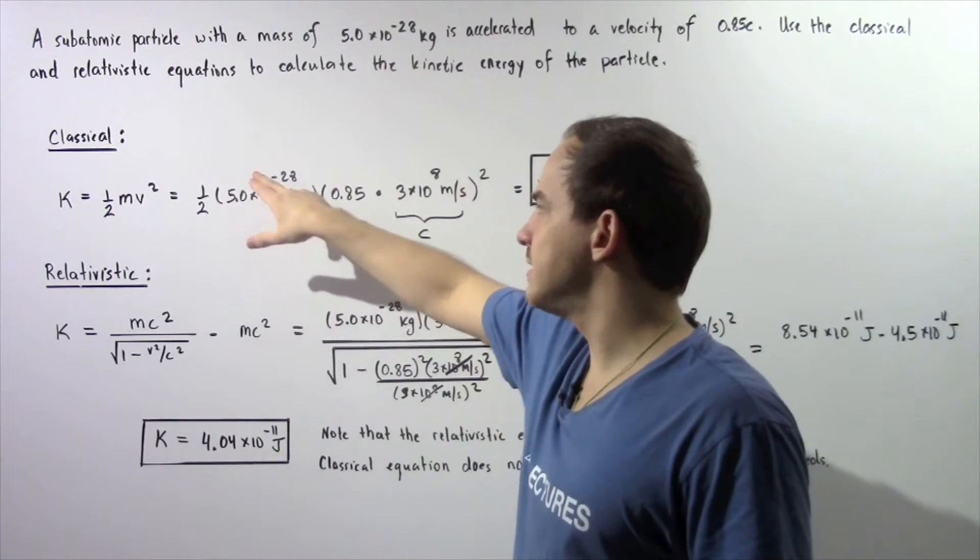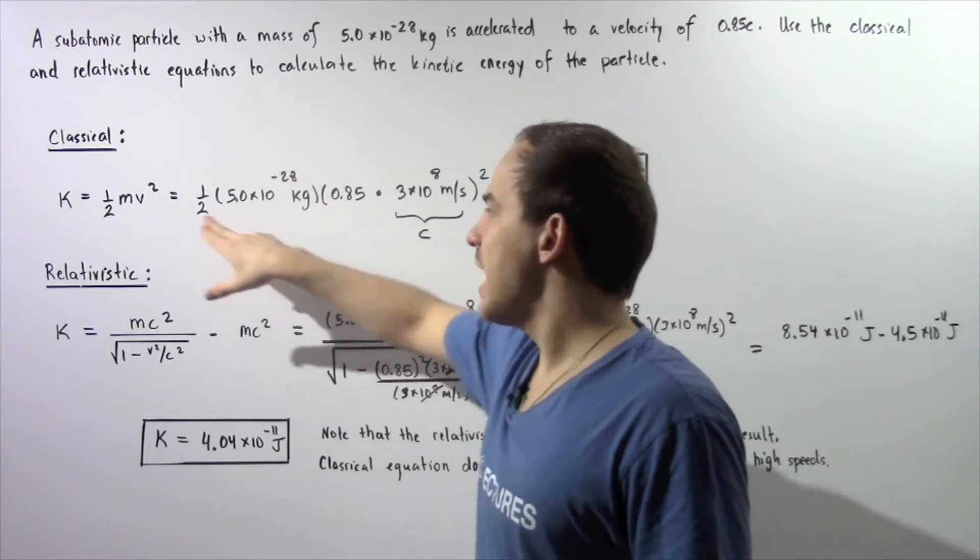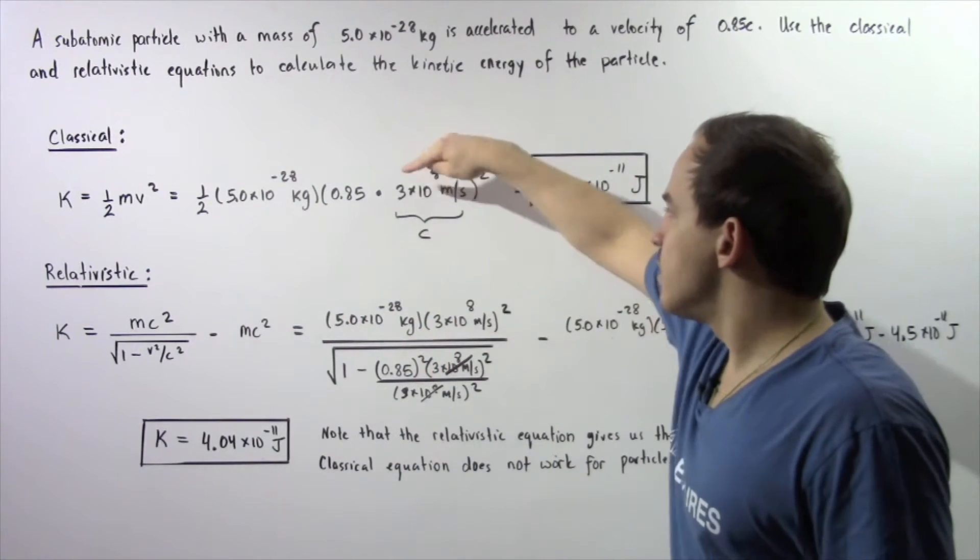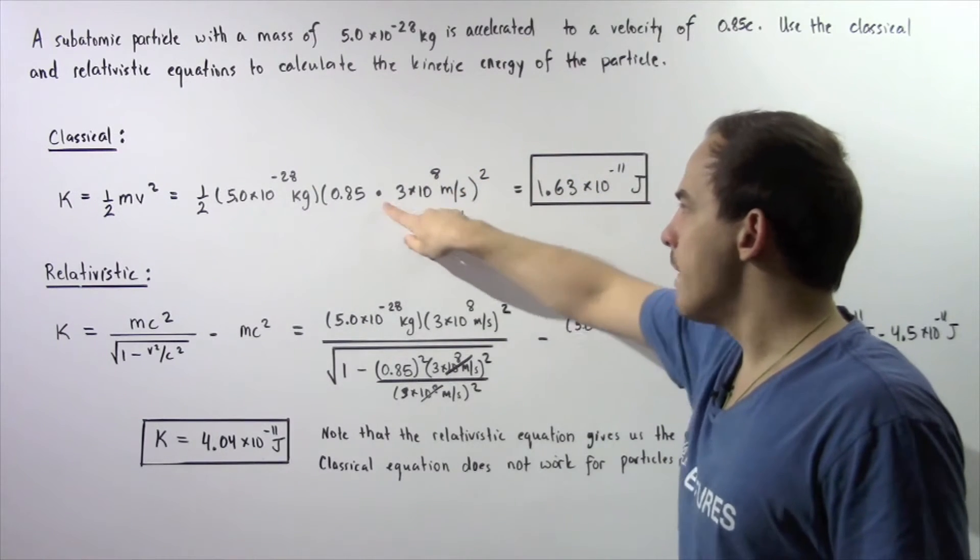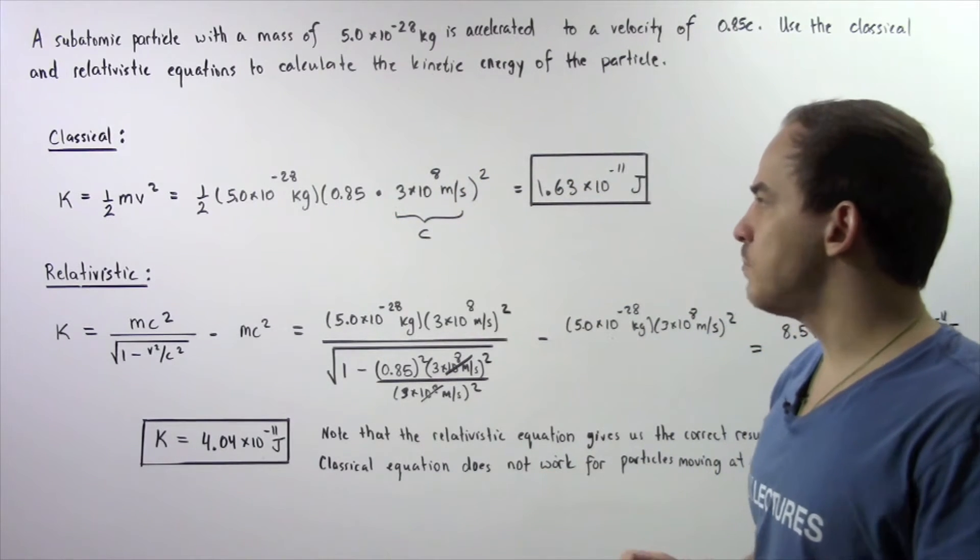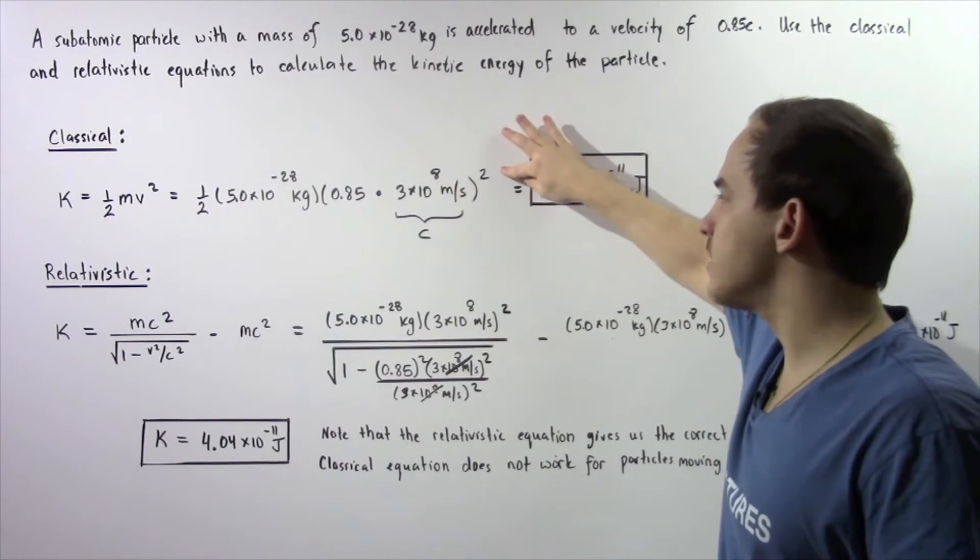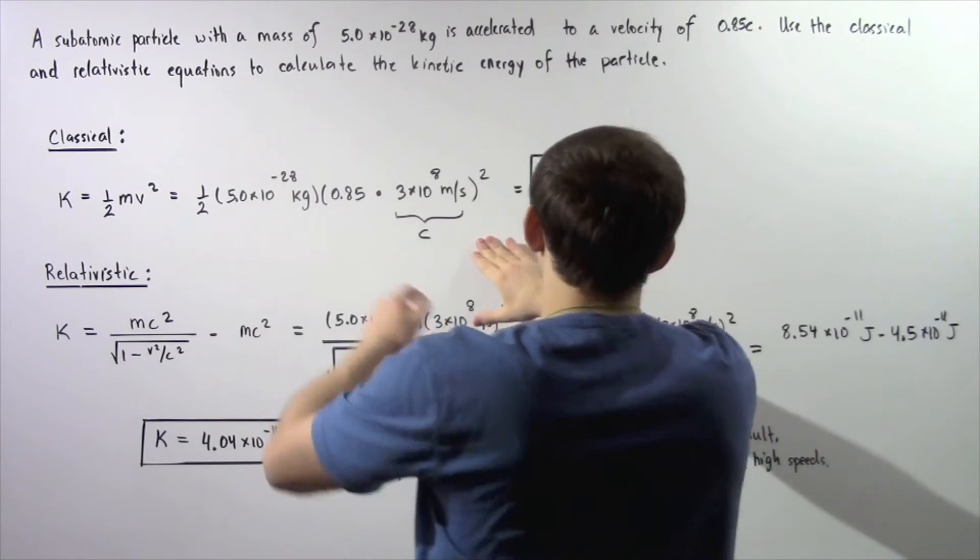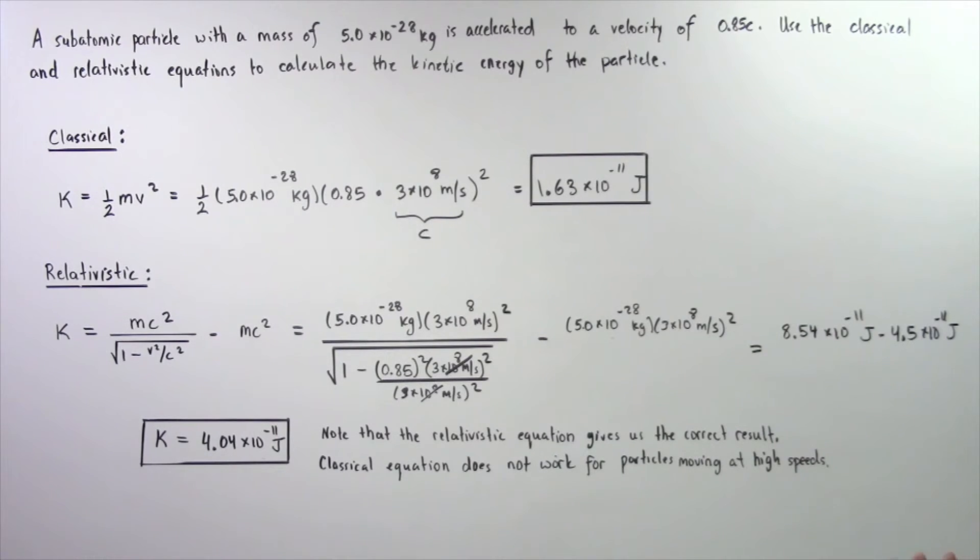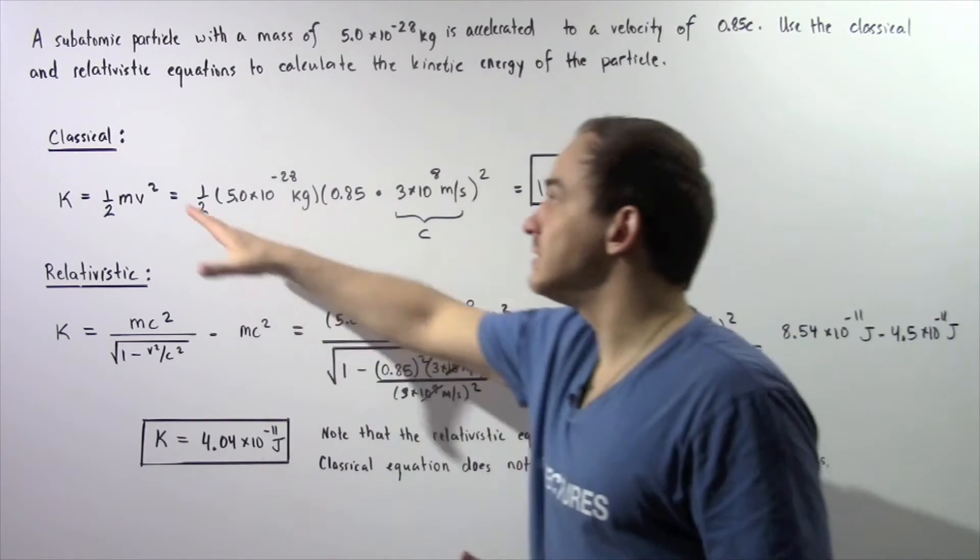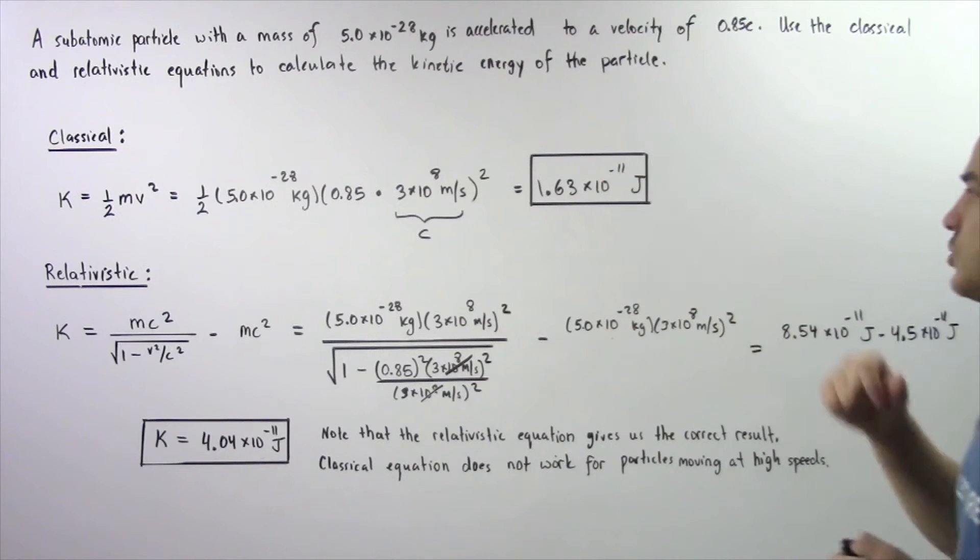Mass is 5 times 10 to the negative 28 kilograms, and the velocity is 3 times 10 to the 8 meters per second, the c value, multiplied by 0.85, and we square that. We plug these values into our calculator and receive that our energy of the particle based on the classical equation is 1.63 times 10 to the negative 11 joules.